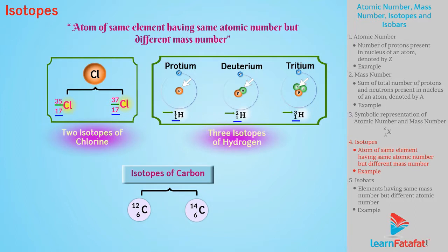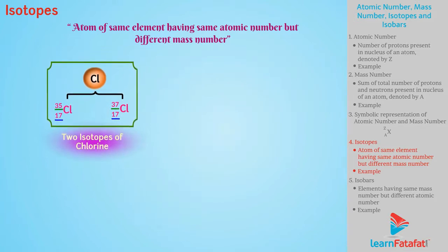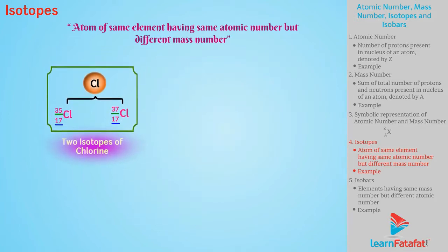It can be easily seen that mass number of isotopes are different whereas they have same atomic number. So, if you take an amount of element, isotopes of that element will be present in an appropriate ratio.